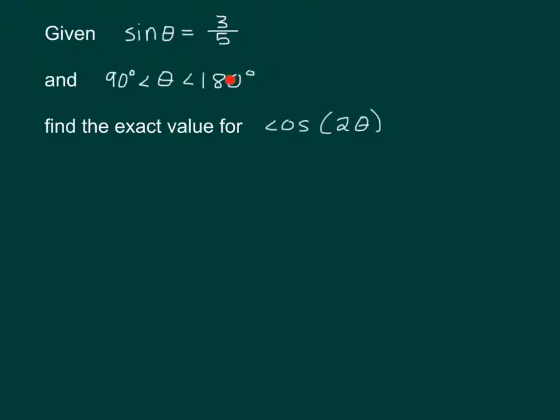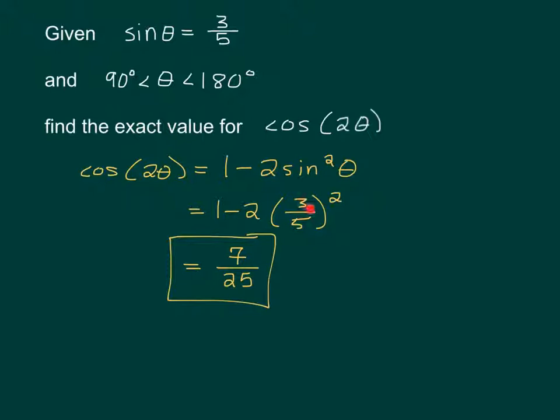We do not need to know what cosine θ is. All we need is this. This information right here would allow us to solve for cosine θ. Since we don't need it, we're not going to use it. So, our formula for cosine 2θ using only sine is 1 minus 2 sine squared θ. We know that sine is 3 fifths. What is 1 minus 2 times 3 fifths squared? We just plug into our formula. We should all be able to get from here to 7 twenty-fifths.